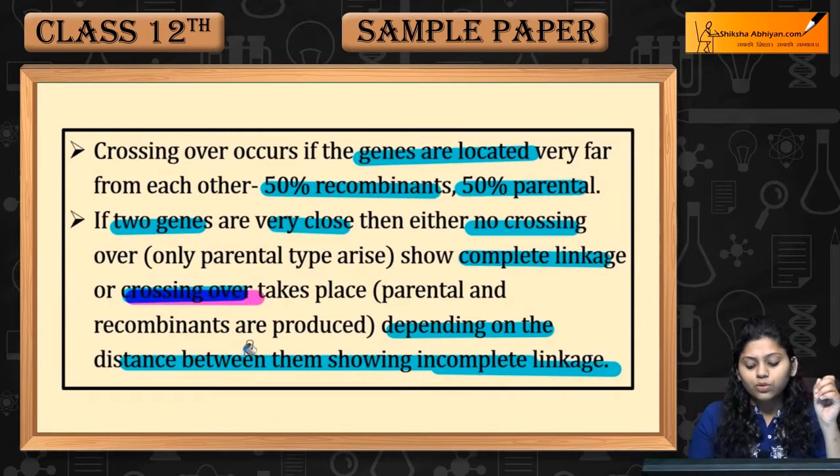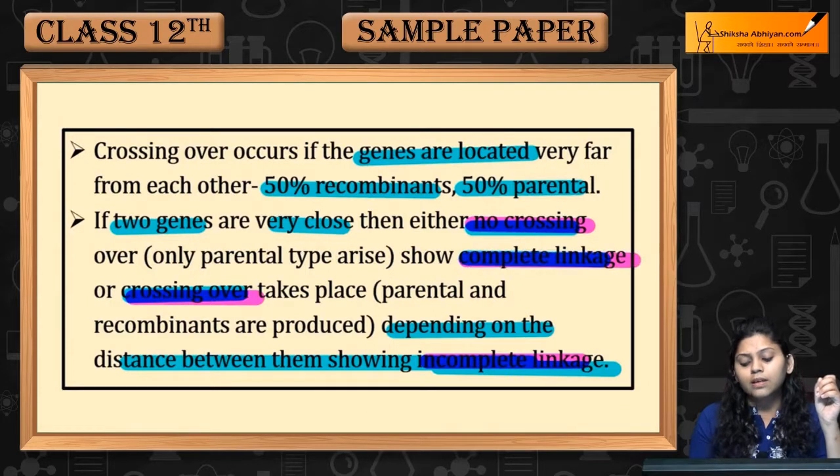To summarize: crossing over results in incomplete linkage, while no crossing over results in complete linkage.